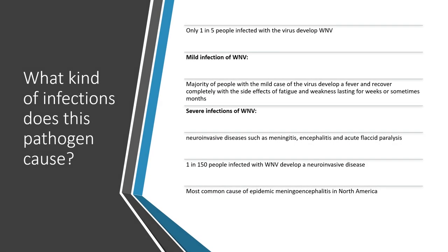What kind of infections does this pathogen cause? Only 1 in 5 people infected with the virus develop West Nile Virus disease. For mild infections, a majority of people develop a fever and recover completely, with side effects of fatigue and weakness lasting for weeks or sometimes months. Severe infections include neuroinvasive diseases such as meningitis, encephalitis, and acute flaccid paralysis. 1 in 150 people infected develop a neuroinvasive disease.